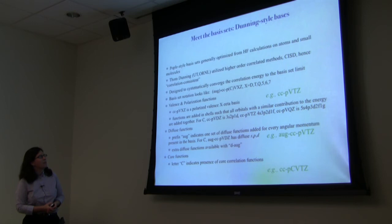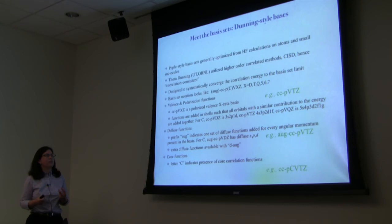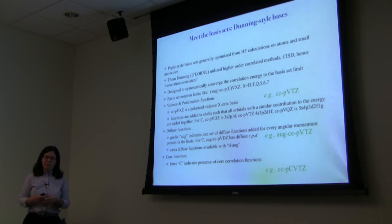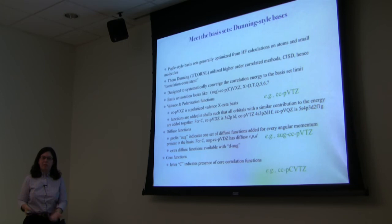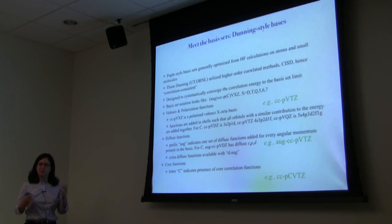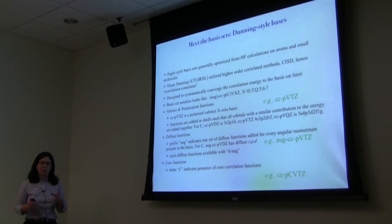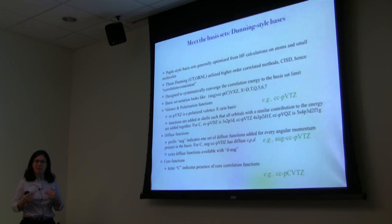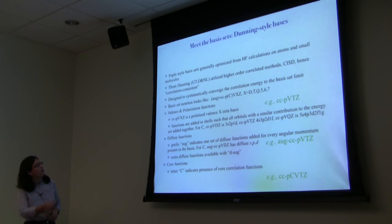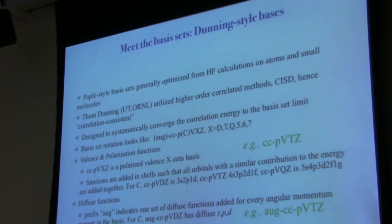More common in practice are Dunning-style basis sets. Pople-style basis sets were optimized from Hartree-Fock calculations on atoms and small molecules. But for higher-order methods — coupled cluster, MP2, configuration interaction — that scale as n^5 to n^8, you want to minimize basis functions while recovering correlation energy. Tom Dunning used higher-order correlation methods to optimize his basis sets; thus these are called correlation-consistent, denoted by lowercase 'cc', the mark of a Dunning basis.